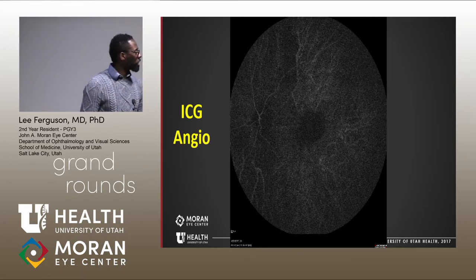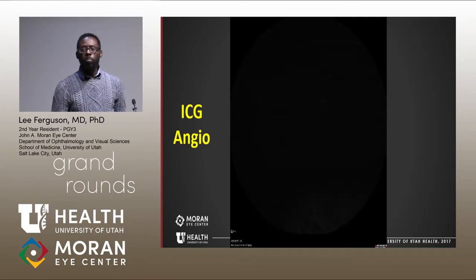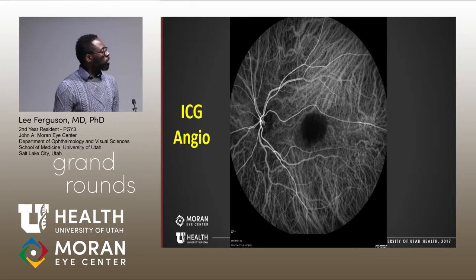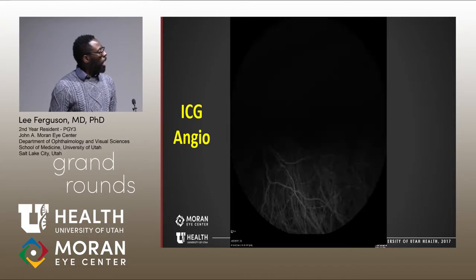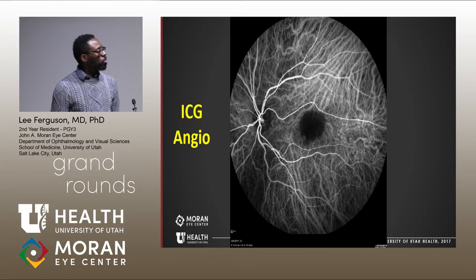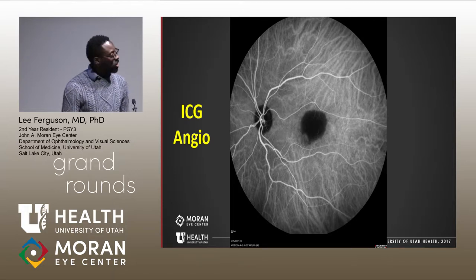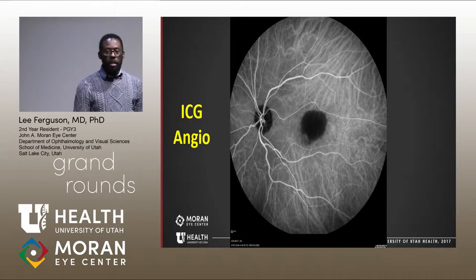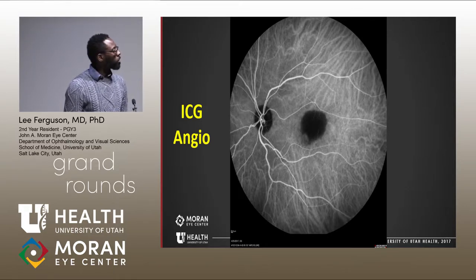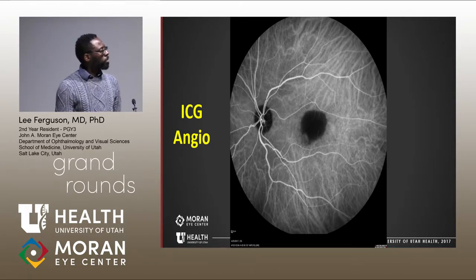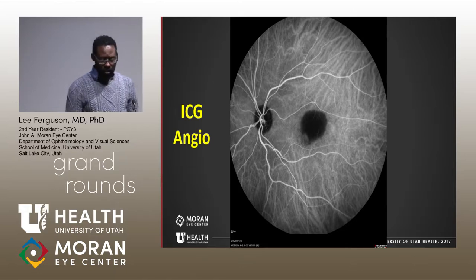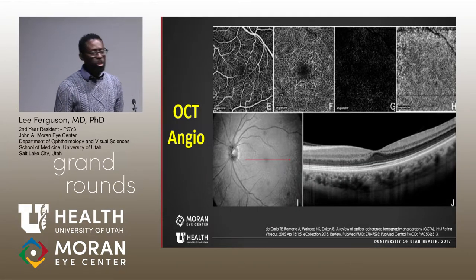With ICG angiography, we can highlight what may be going on in the choroidal area. What you first notice is just central hypofluorescence to the ICG, but for the most part, pretty much unremarkable ICG angiography. Even later in the angiography, the underlying choroidal vessels are unremarkable except for this overlying hypofluorescent area, again highlighting that notched region.